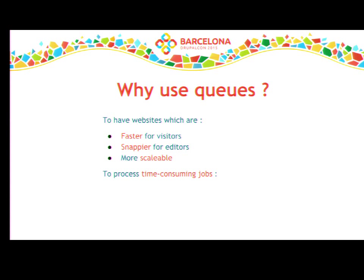At the other end of the spectrum, some jobs are intrinsically slow because of the data they handle. For instance, you obviously don't want to do video encoding while someone is waiting for a page to display. Or consider a photojournalist returning from a fashion show with hundreds of photos — you don't want them to wait for each 16-megabyte photo to upload one at a time. You want these operations performed in the background without interfering with normal site operation.